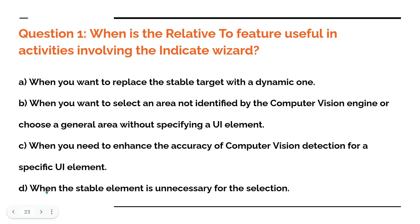Option D: when the stable element is unnecessary for the selection. Now tell me, out of A, B, C, D, which is the right answer? Pause the video here and start commenting your answers — whatever you feel, start commenting your answers.